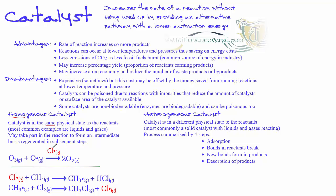An example of a homogeneous catalyst is a chlorine radical, which can catalyse the breakdown of ozone, or chlorine radicals in free radical substitution can cause substitution of hydrogen for chlorine to generate a halogenoalkane. Other videos in my organic chemistry and green chemistry chapters will address these specific reactions.